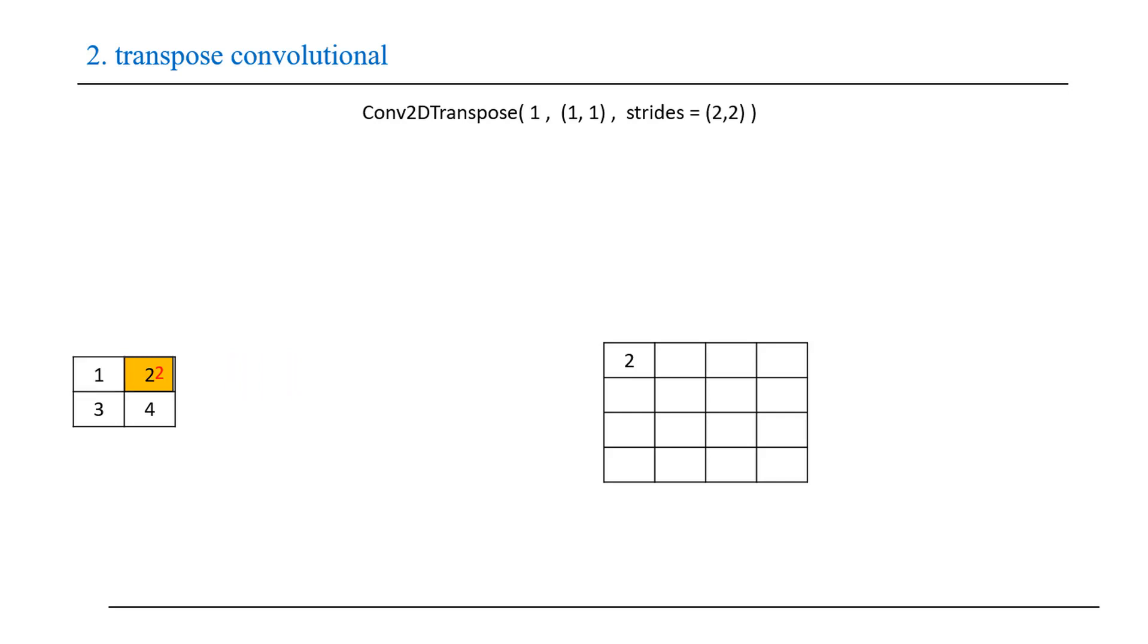For the second element, 2 times 2 equals 4, but because we have stride equals 2x2, we put the result here. And the same thing for the third element and so on.